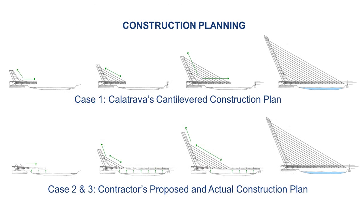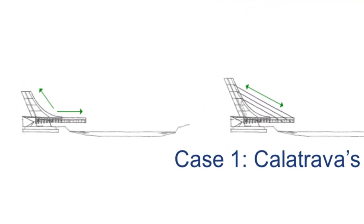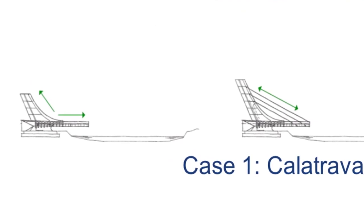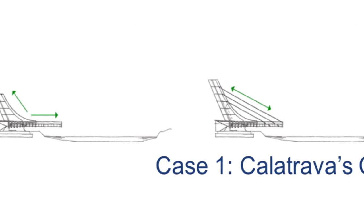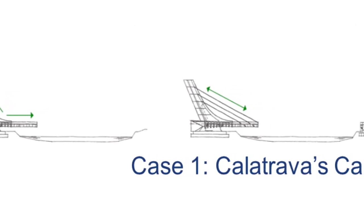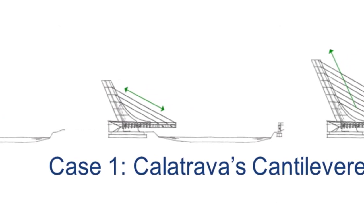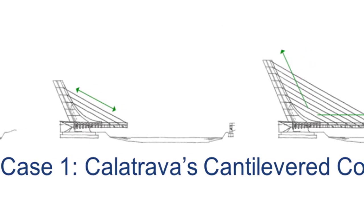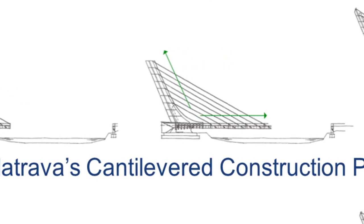There were three construction plans for the Alamillo Bridge. The first plan, Case 1, was Calatrava's original construction plan and also became part of the bidding documents. According to the bidding documents, the steel box girder would be prefabricated in 12-meter segments, with each segment transported and welded as a cantilever in front of the previously placed segment. Then three pairs of steel wings would be welded on each side, precast slabs placed as formwork for a cast-in-place slab, and the resulting 12-meter deck segment supported by a pair of cable stays connected to the pylon.